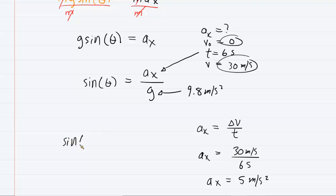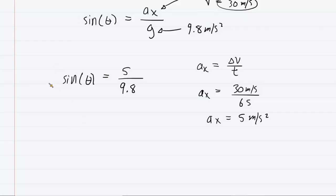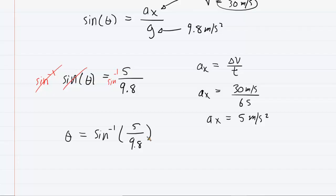Now we return to our equation for the angle, plugging in the acceleration of 5 and g of 9.8 — omitting units since they cancel. To solve for theta, we take the inverse sine of both sides: the inverse sine and sine cancel, giving us theta equals the inverse sine of 5 over 9.8. Punching that into a calculator set to degree mode, we get an angle of about 30.7 degrees. This is the correct answer to part A.